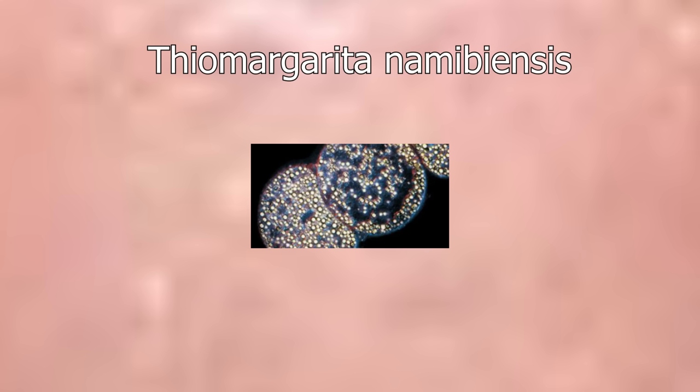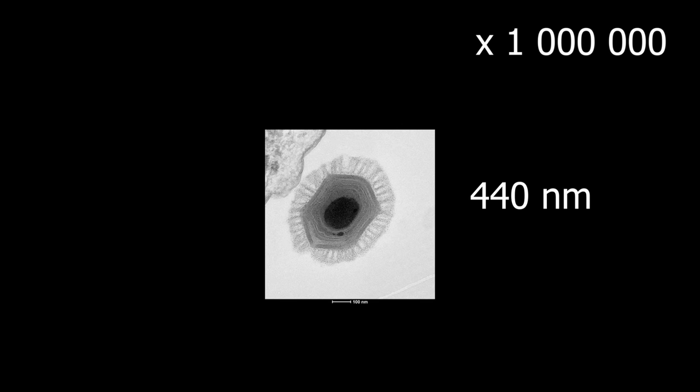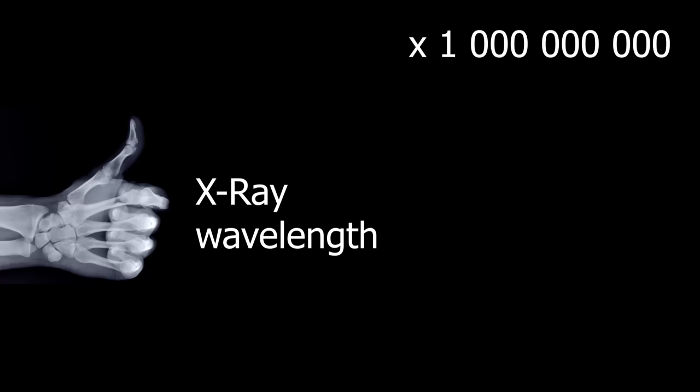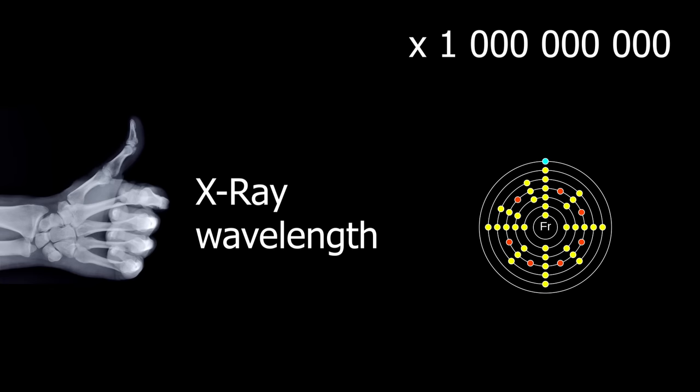If we zoom 1,000 times on a human, we get to see the Thea margaritonimabiensis, the largest bacterium ever recorded, at half a millimeter. Zooming in one more thousand times, we get to see the largest virus at 440 nanometers, the megavirus childnsis. One more zoom and we get to the wavelength of the X-ray and the largest atom, that of francium.